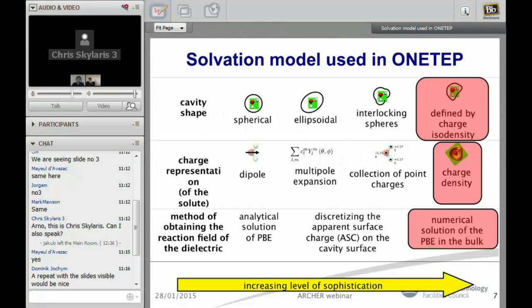Now we can see the solvent model that we developed in ONETEP and here you can see the choices you have and the choices we have made. The first choice is the shape of your cavity. This can be spherical, ellipsoidal, interlocking spheres, or in the case of ONETEP it can be defined by an isosurface of electronic density as shown here. Then the representation of the charge, you have increasing levels of sophistication: dipole multipole expansion, collection of point charges, or in our case we use the full density of the electrons as it comes from the quantum calculation.